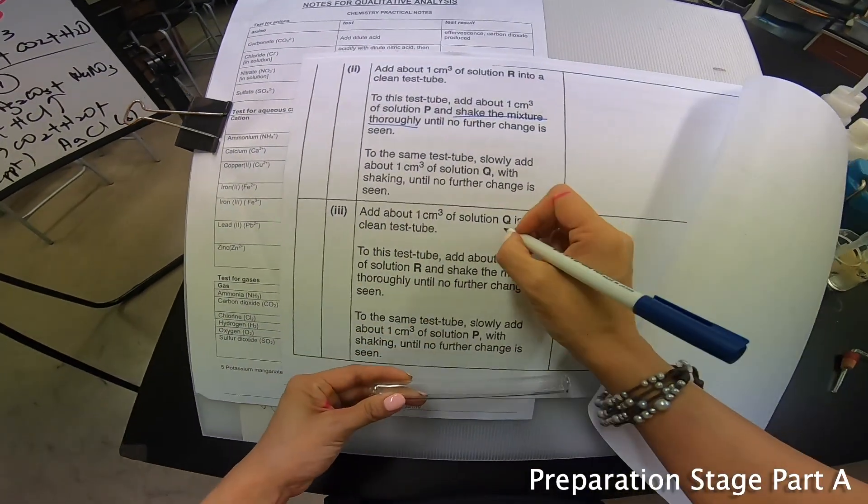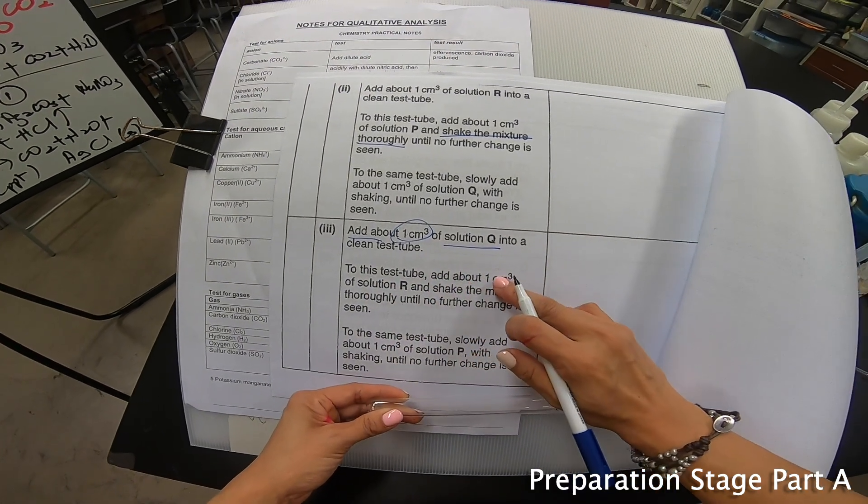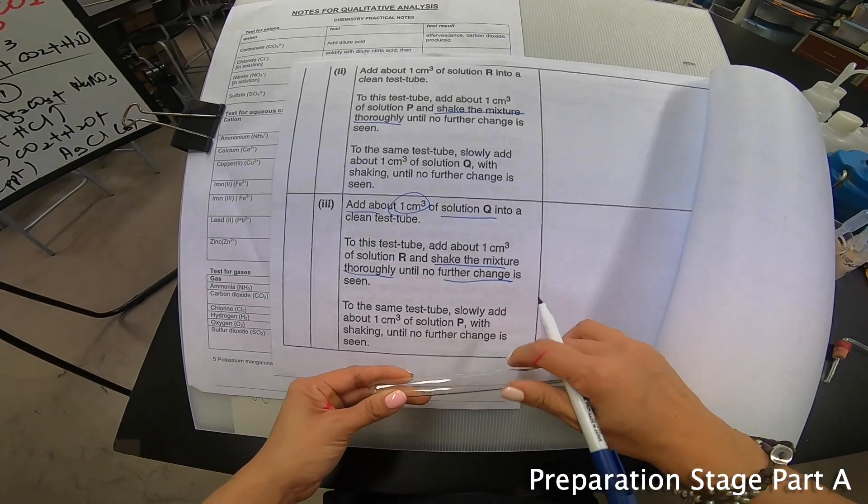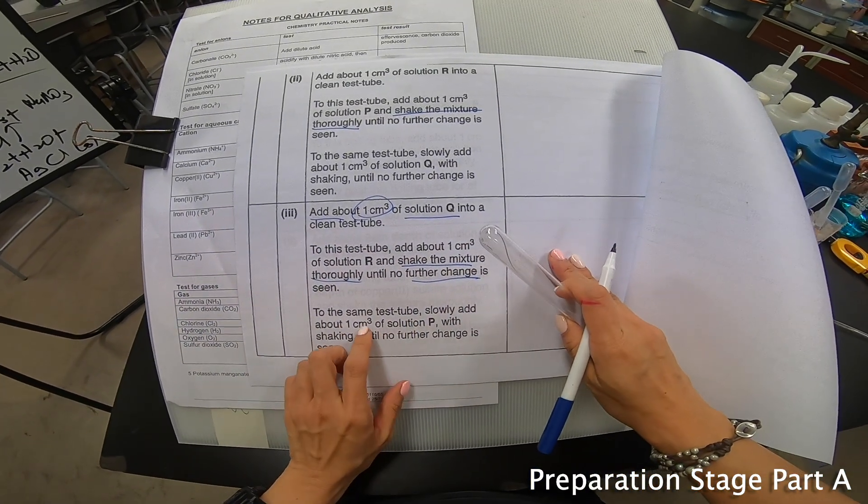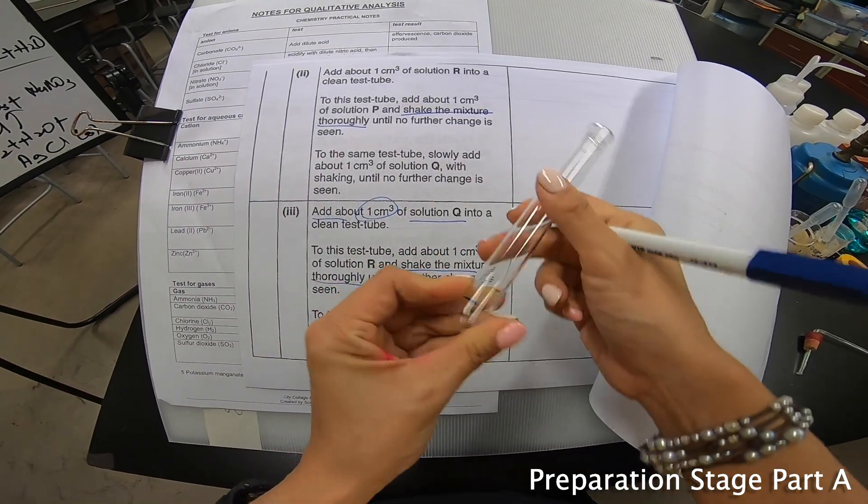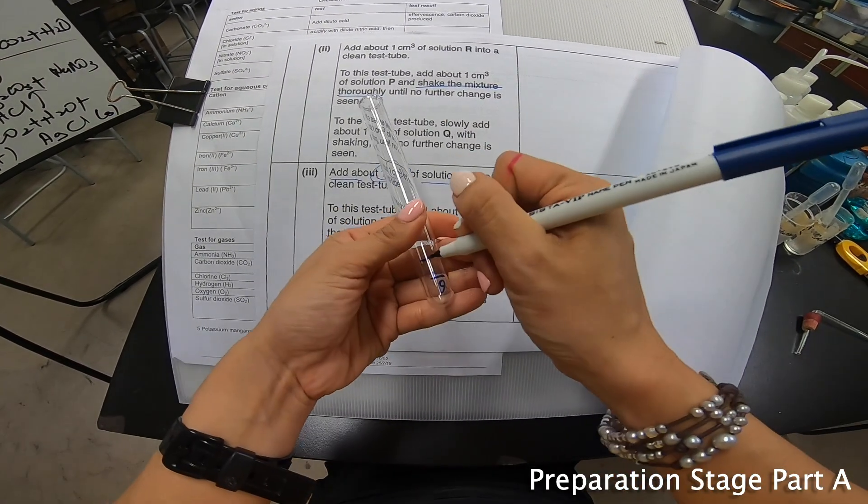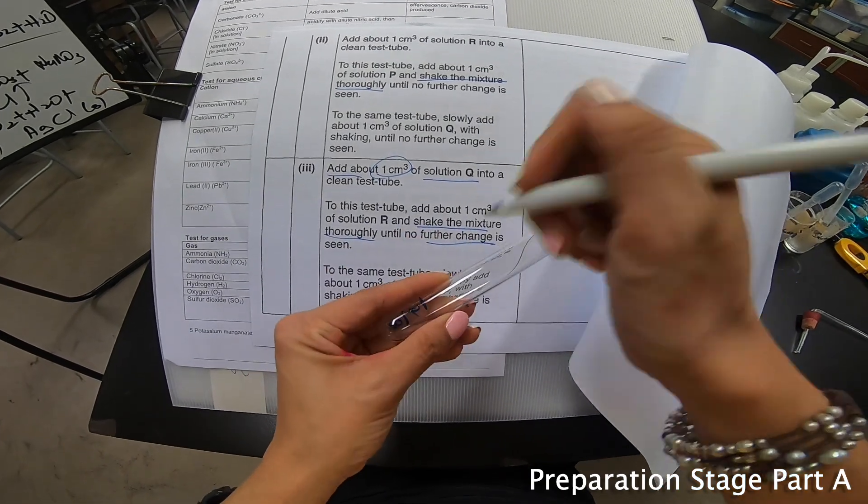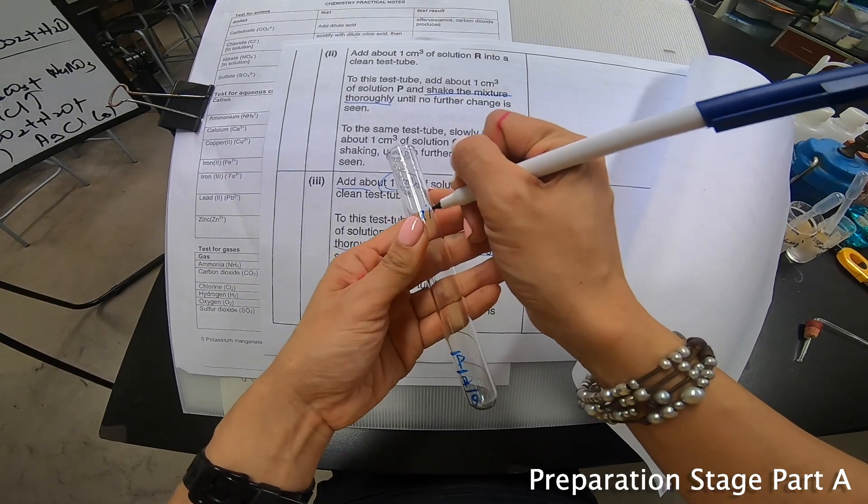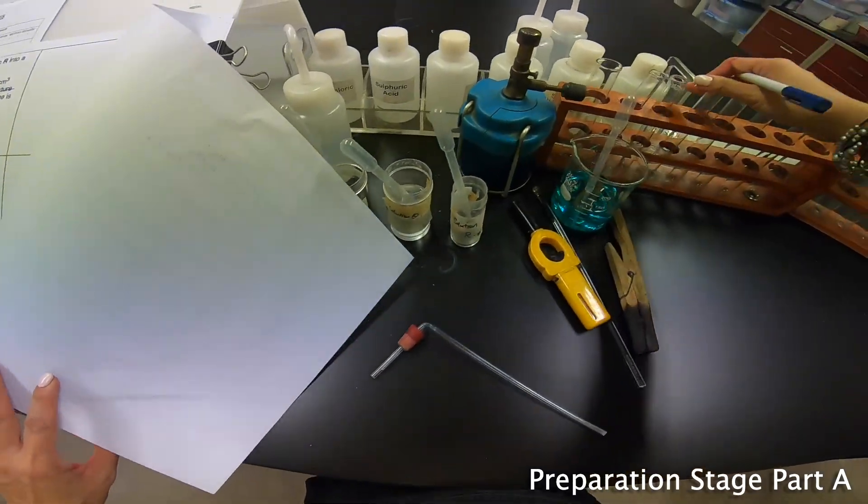It's about the same, but we just keep on changing from R this time around to P to Q. So I make sure I write down properly R, P, and Q. And this is A part 2. Next one, part 3. This round, I add about 1 cm³ of solution Q into a test tube. To this test tube, add about 1 cm³ of solution R. Shake the mixture until no further change is seen. And to the same test tube, add about 1 cm³ of solution P.